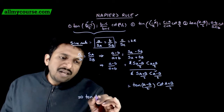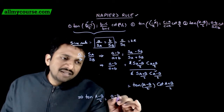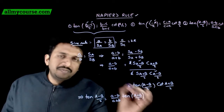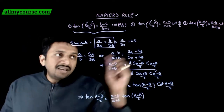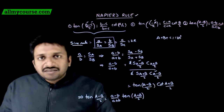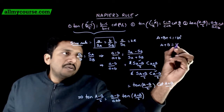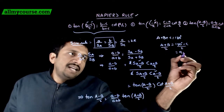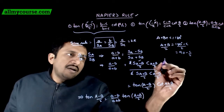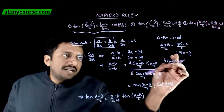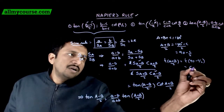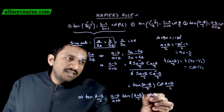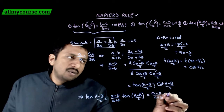This gives us: tan((A minus B)/2) equals (a minus b)/(a plus b) times tan((A plus B)/2). Now, since ABC is a triangle, A plus B plus C equals 180 degrees. So A plus B equals 180 minus C, and (A plus B)/2 equals 90 minus C/2. Therefore, tan((A plus B)/2) equals tan(90 minus C/2), which equals cot(C/2).